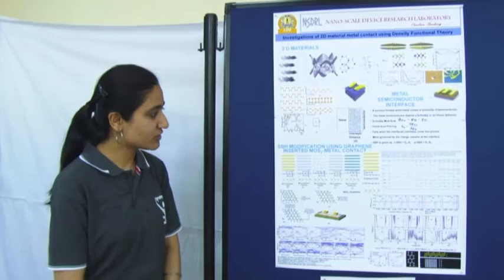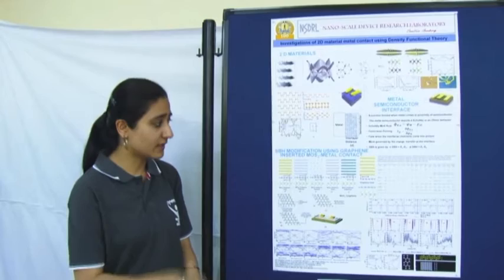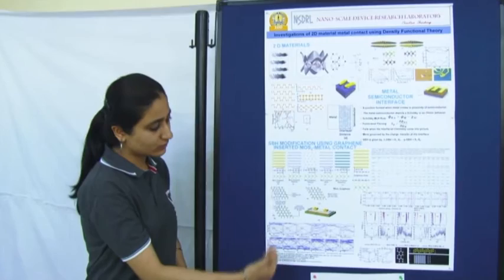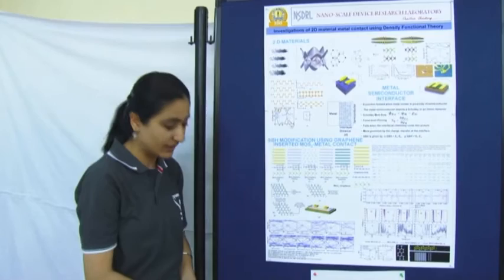Now this poster indicates how the short-term area height gets modified when we use this graphene insertion in a metal contact. Here I can show many bar configurations. On the basis of these bar configurations are further used here in this transistor and how the short-term area height varies when the graphene is inserted between NOS2 and a metal.